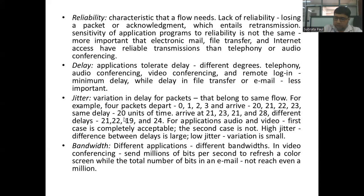If the flow does not attain reliability, then retransmission needs to be done, because when a packet is lost or collided midway between source and destination and has not reached the receiver's end, it is of no use. So to make it available at the receiver's end, it needs to be retransmitted. There are various applications for which reliability is a most important factor, like electronic mail, file transfer, and internet access. While there are other applications like telephony or audio conferencing where reliability is not as critical.